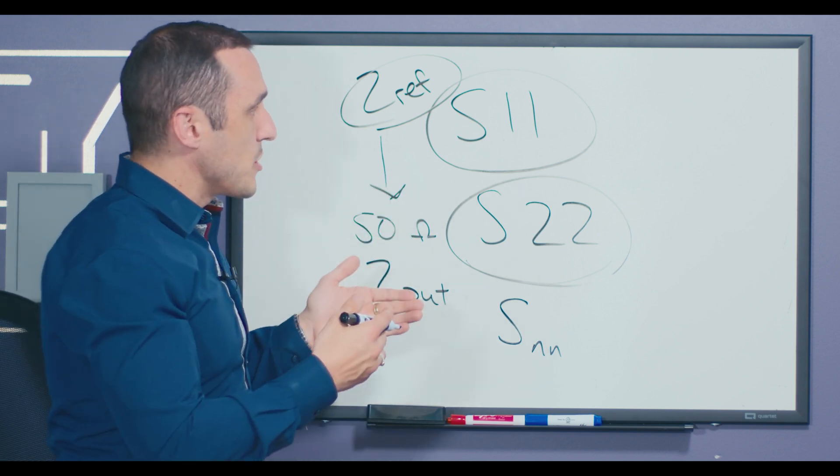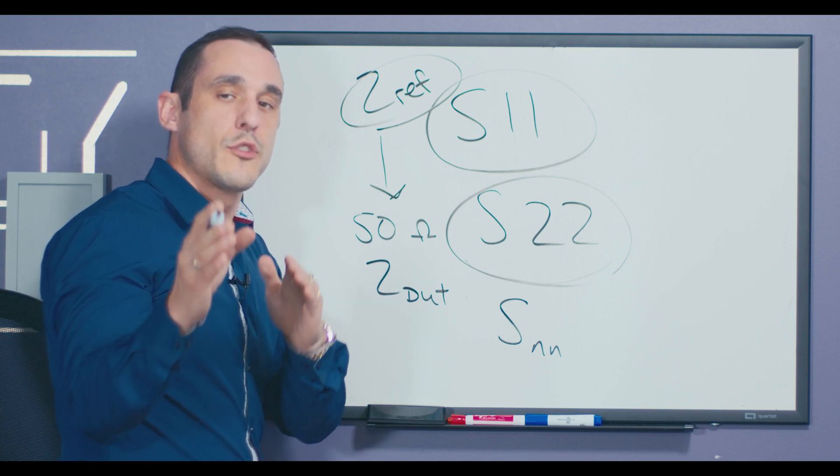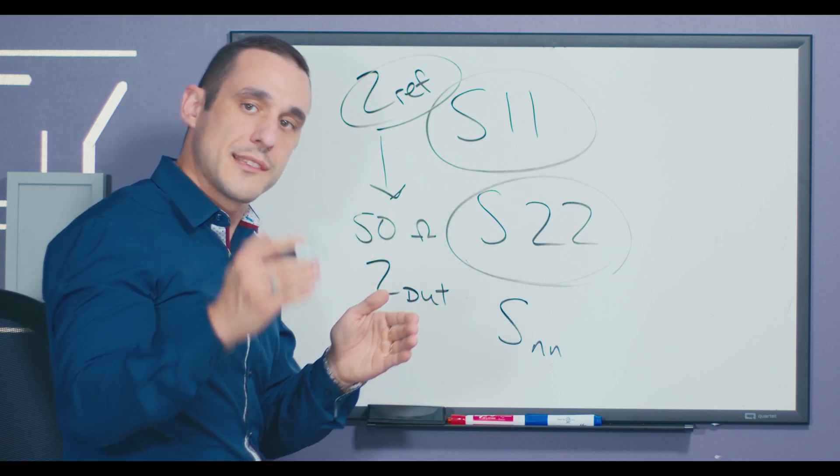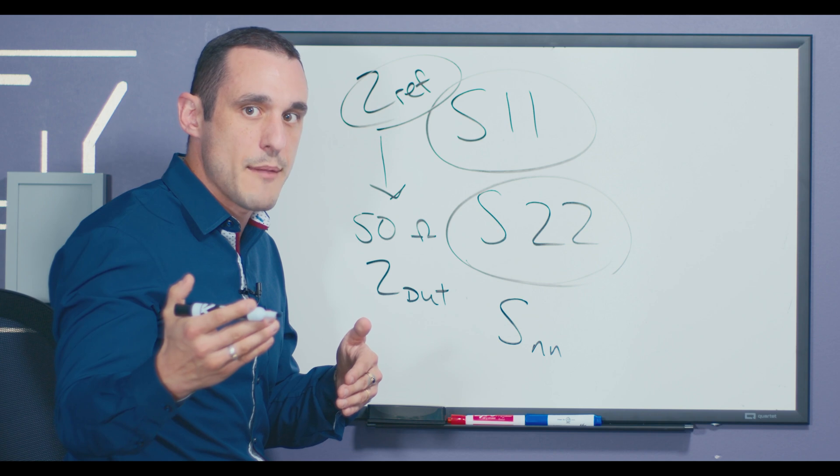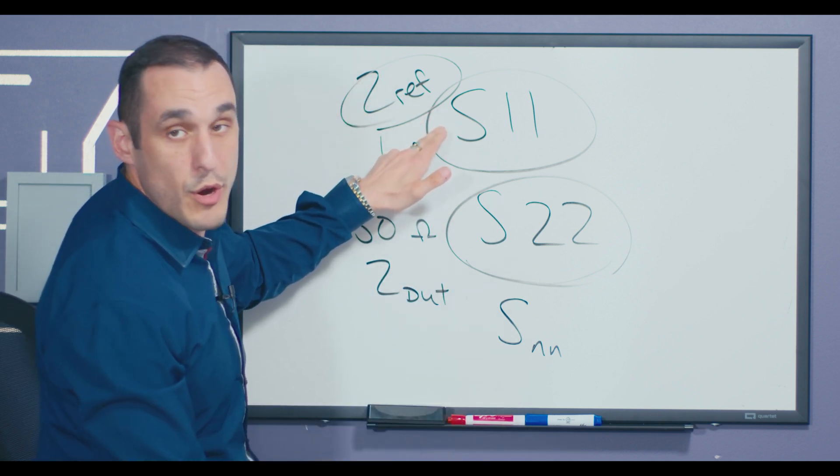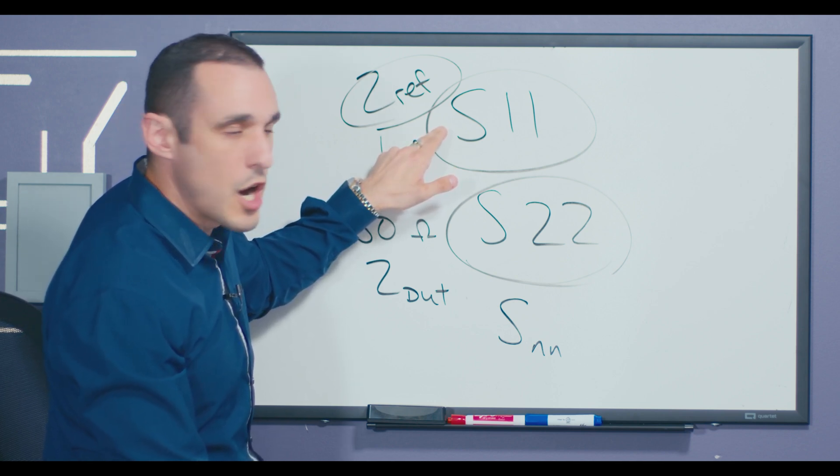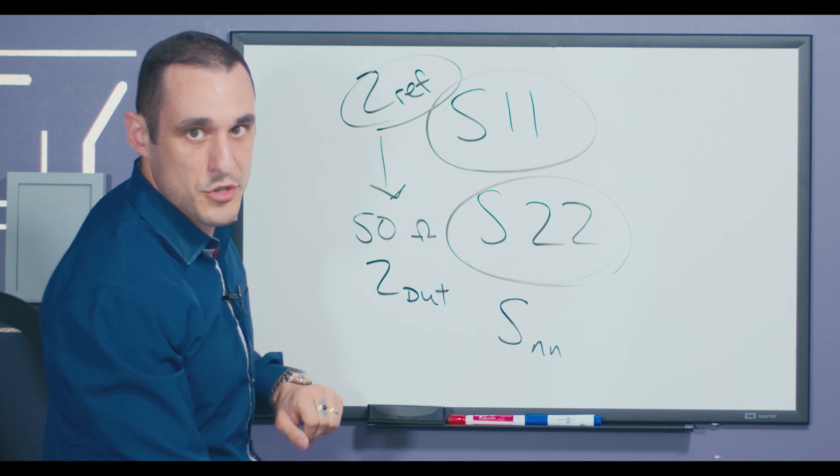When we're doing one of these measurements, what do we expect to see? So I think that's the first thing to note whenever you're going to do some kind of measurement, is to think about what do you expect to see in that measurement. So let's examine S11 and see what we will expect from our VNA measurements, and then we can actually interpret what's going on with that impedance that we're trying to measure.